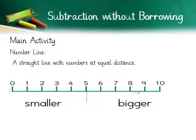Carrying on with the main activity, let's discuss the number line. A number line is a straight line with numbers at equal distance. If you look at the number line given below, it has 10 divisions and each number is at equal distance. The midpoint is at number 5. Moving to the right, numbers increase and get bigger; moving to the left, numbers get smaller.